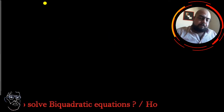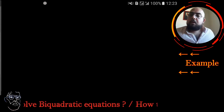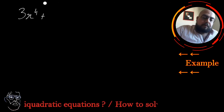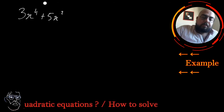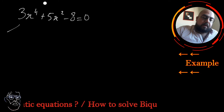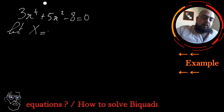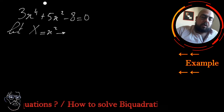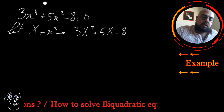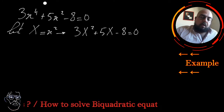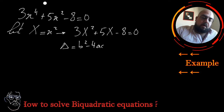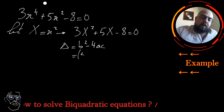The first example I'm going to take is 3x⁴ + 5x² - 8 = 0. You say: let capital X be equal to x², so the equation is transformed to 3X² + 5X - 8 = 0.